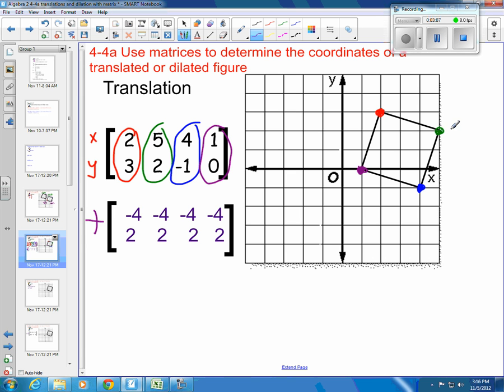So same thing here. If I'm at (5, 2), I'm going to subtract 4 and then I'm going to add 2. And my new... oops, that should be green. The point would be there.